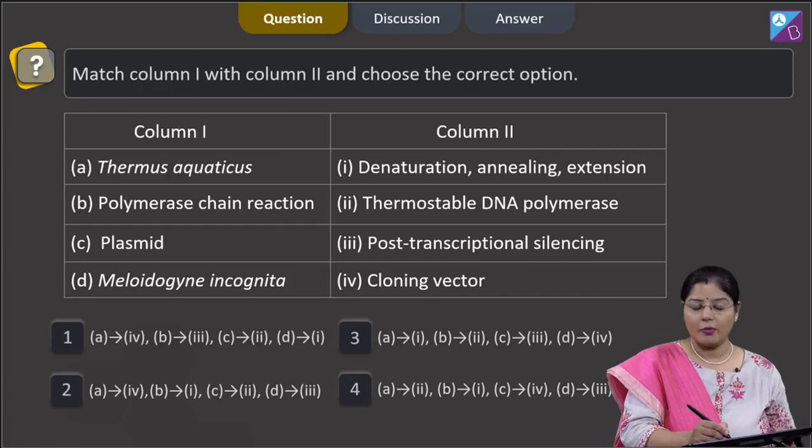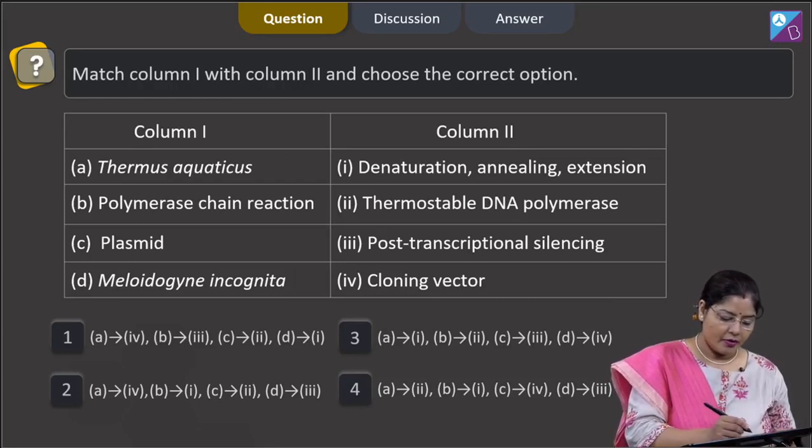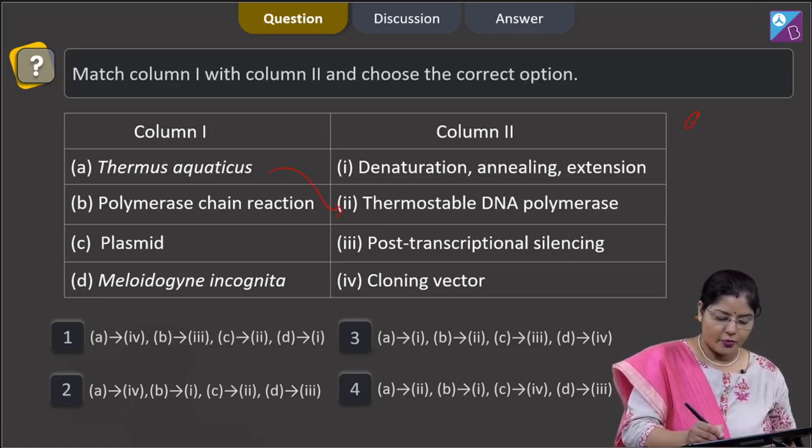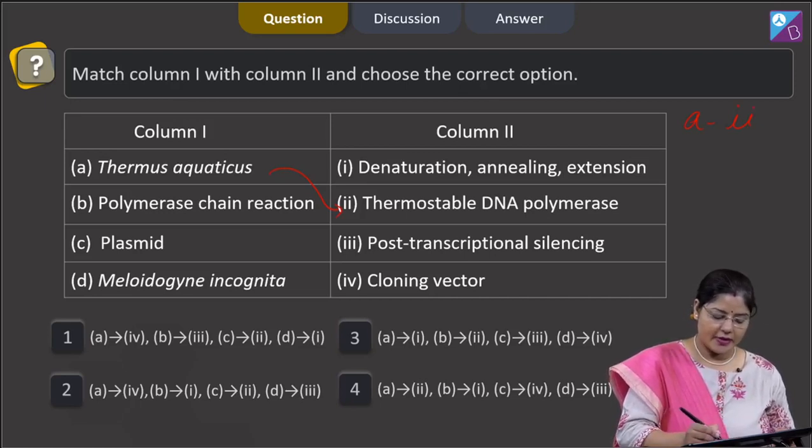Proceeding to the next question. Question states: match column 1 with column 2 and choose the correct option. Column 1, Thermus aquaticus. Thermus aquaticus is a thermophilic organism and from this organism, a bacteria, thermostable DNA polymerase is obtained. So A matches with 2. Polymerase chain reaction, that is PCR.